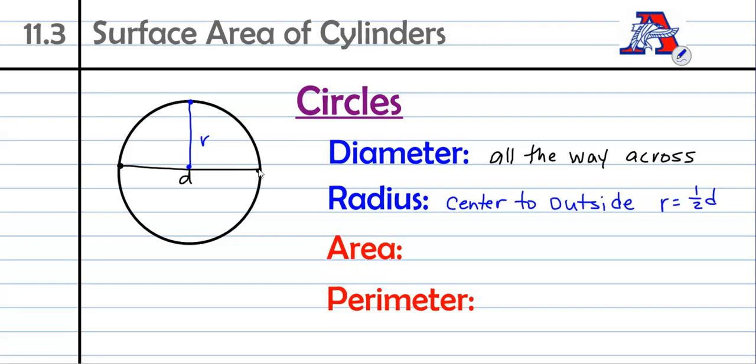Area of a circle: if you are finding the area of a circle, you are going to use the formula A equals pi r squared, where r is the radius. Pi, if you don't remember, is approximately 3.14.